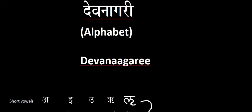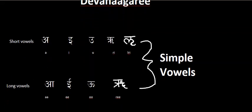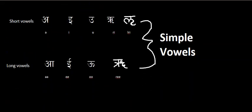So in this video, we'll be learning the vowels. In Sanskrit, there are 13 vowels, and they're broken up into two sections. You have simple vowels and you have diphthongs. Simple vowels are broken up into two further sections: the short vowels and the long vowels.